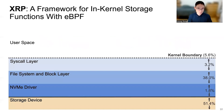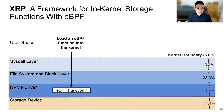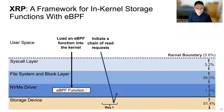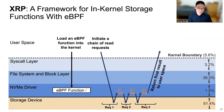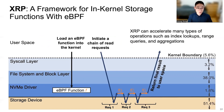To achieve this goal, we build XRP: a framework for in-kernel storage functions with eBPF. XRP allows applications to offload eBPF functions into the kernel. When the application initiates a chain of read requests, the eBPF function can be called to parse I/O responses and submit more requests if necessary. Only the final result will be returned to user space. We can use XRP to accelerate many different types of operations, such as index lookup, range queries, and aggregations.